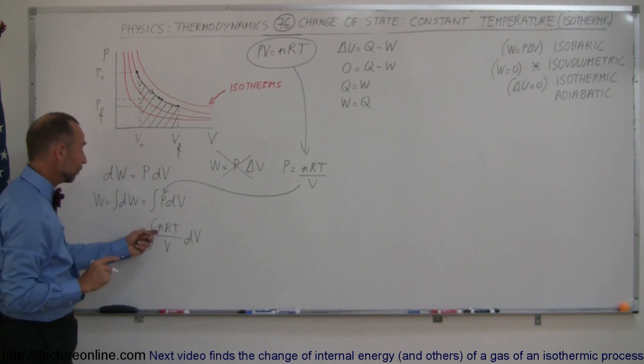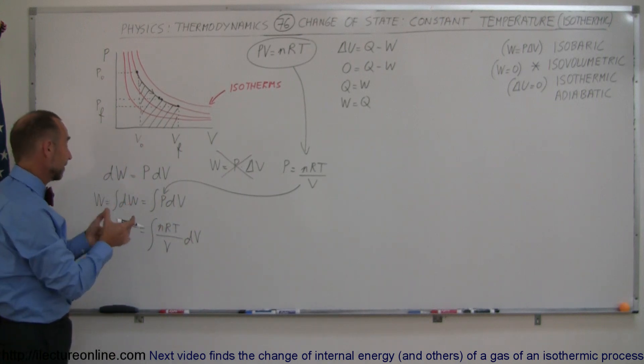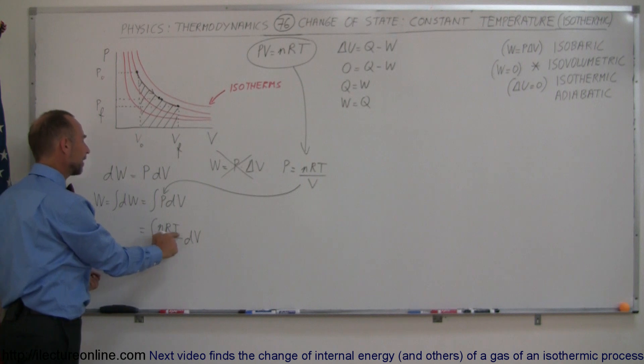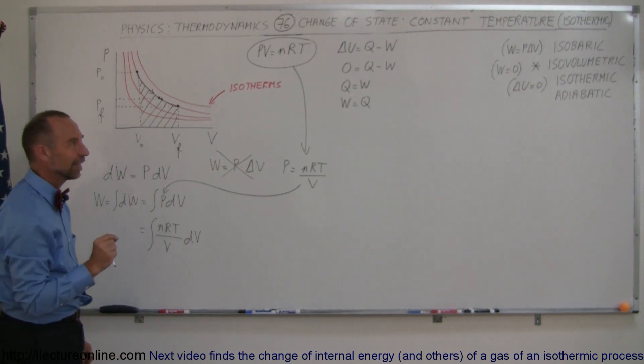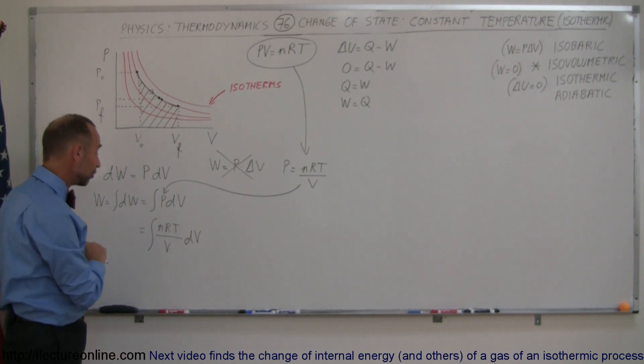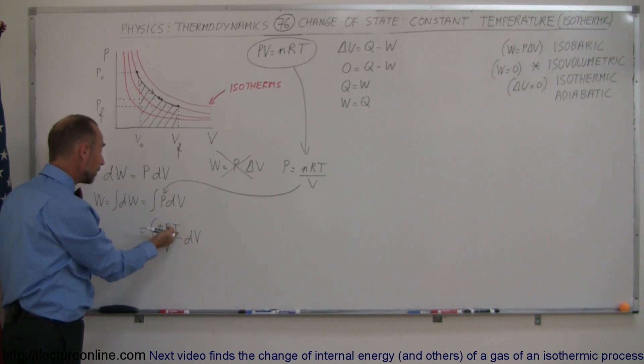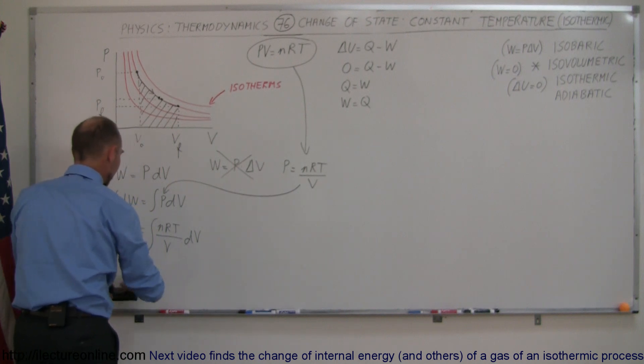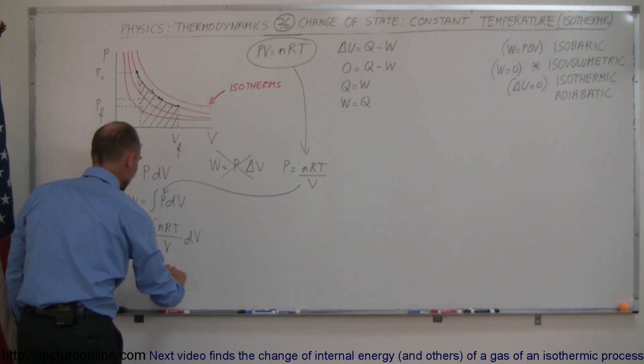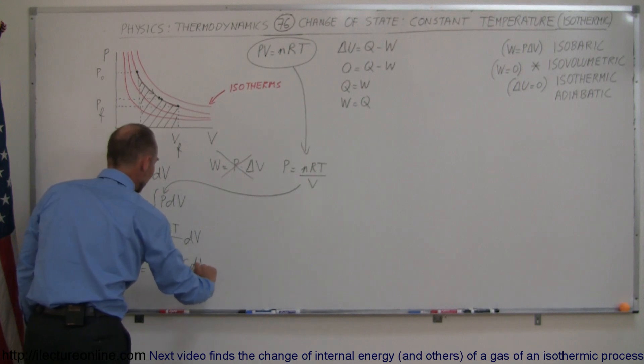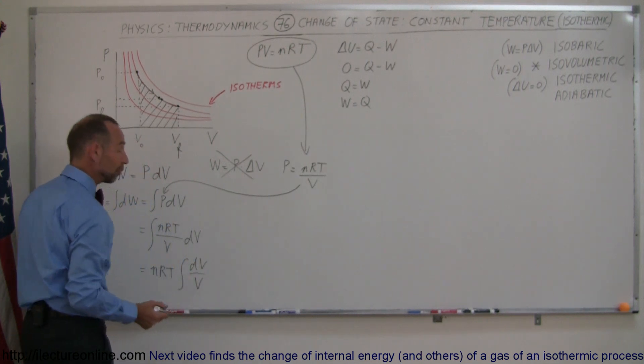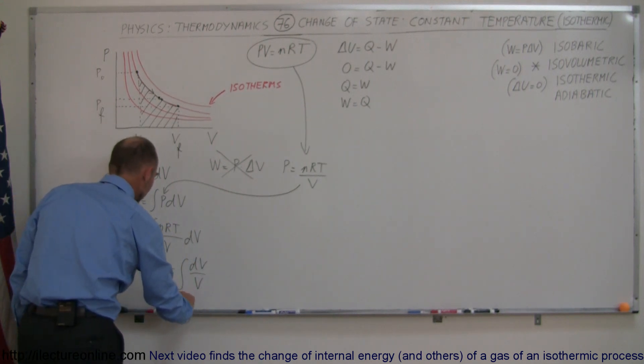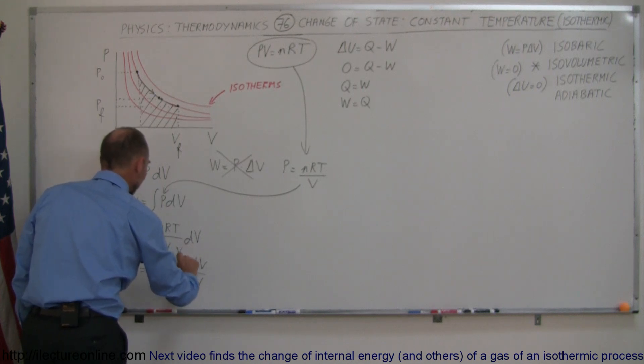Now notice in this case, n of course is the number of moles of that gas sample, which is constant. R is a constant, and also T is a constant. With an isothermic process, the temperature doesn't change, so all three items here in the numerator can come out of the integral sign. So this is equal to nRT times the integral of dV over v, and of course when we integrate that, we go from the initial volume to the final volume.